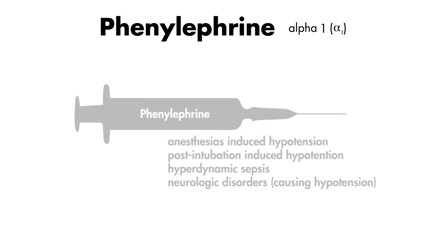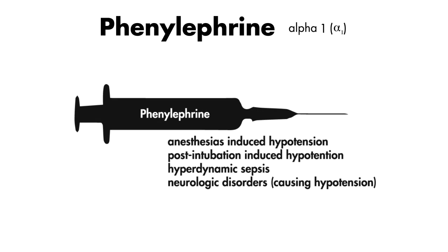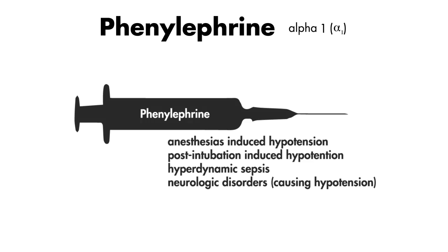You may see phenylephrine commonly used as a pre-made syringe in things like anesthesia or post-op intubation-induced hypotension. It is also seen in cases of hyperdynamic sepsis and other neurologic disorders causing hypotension.